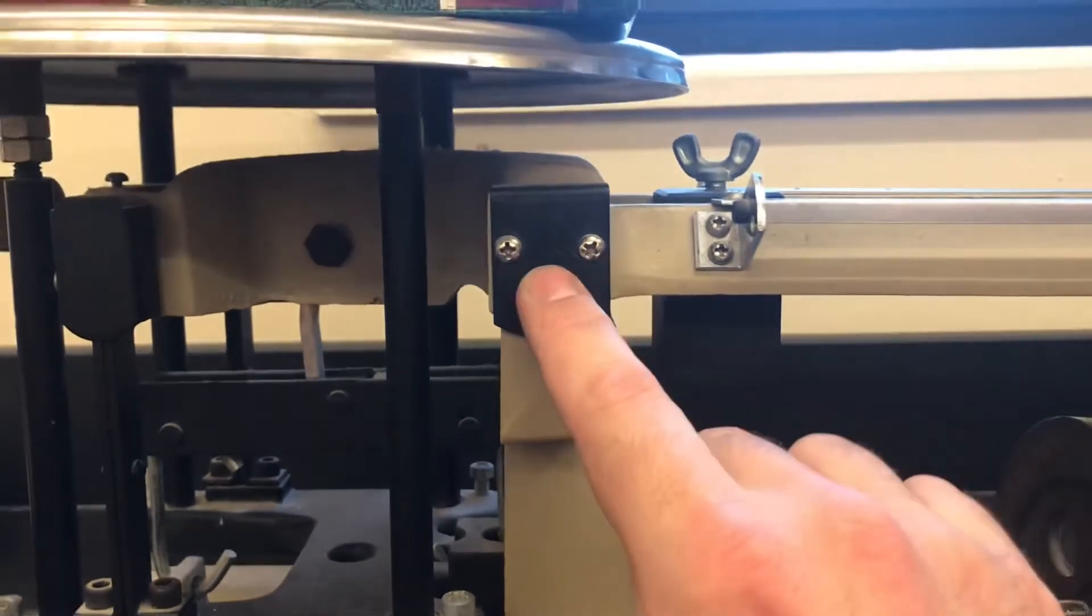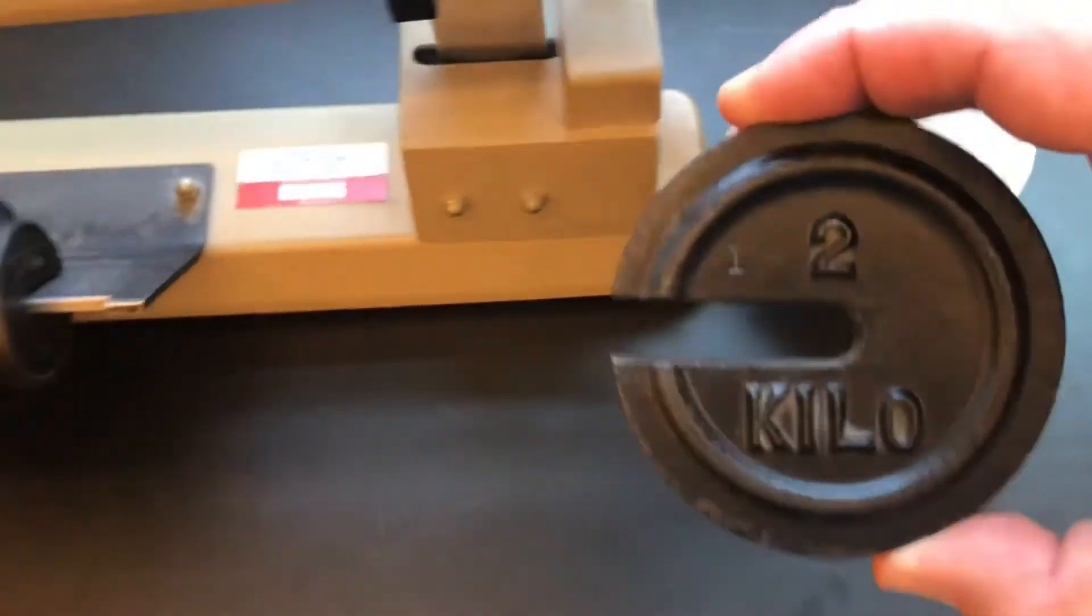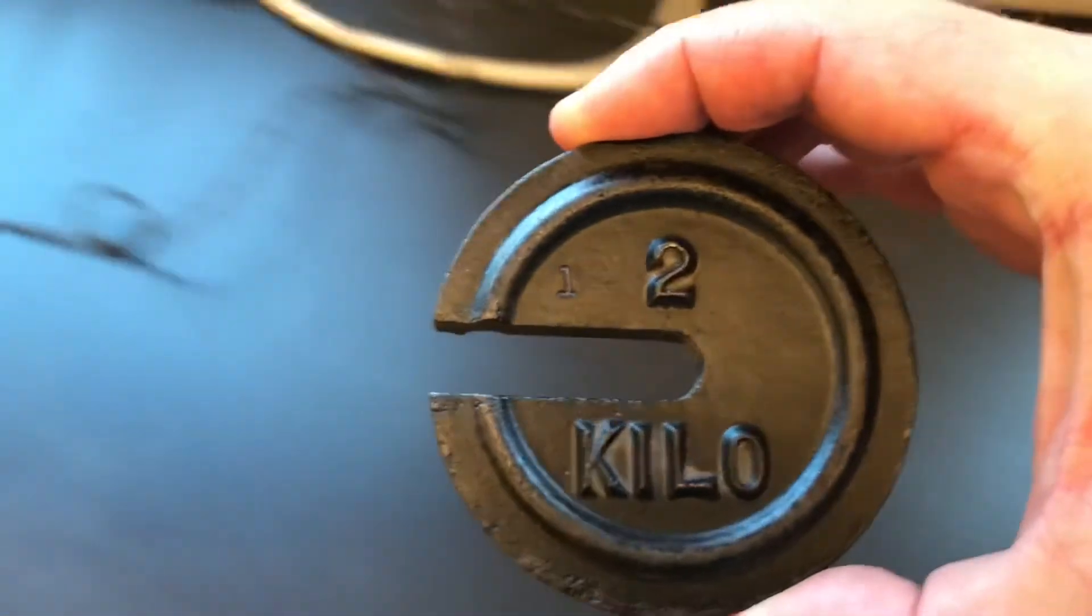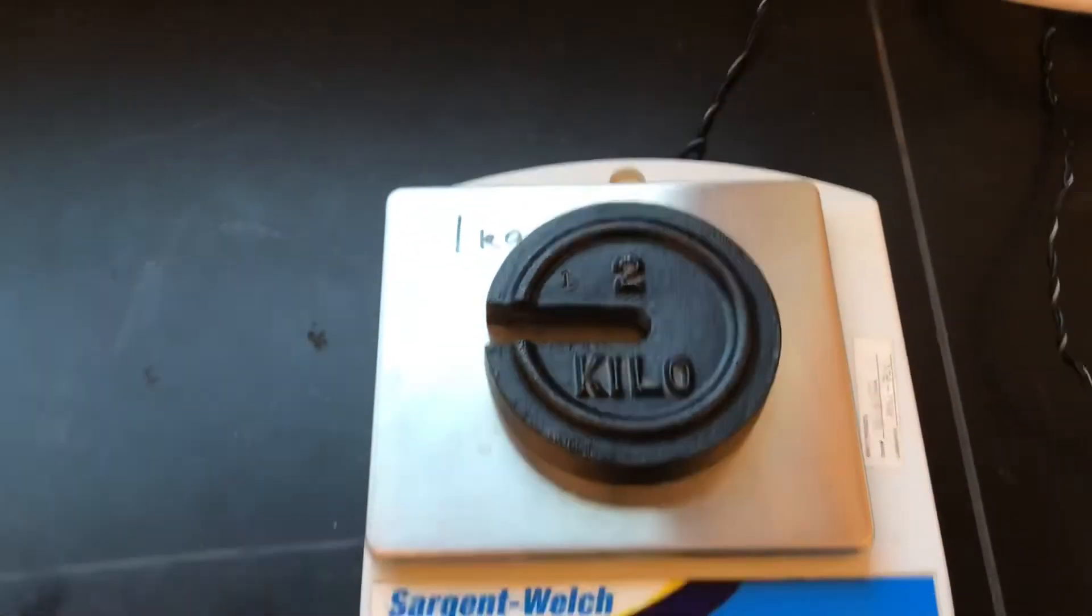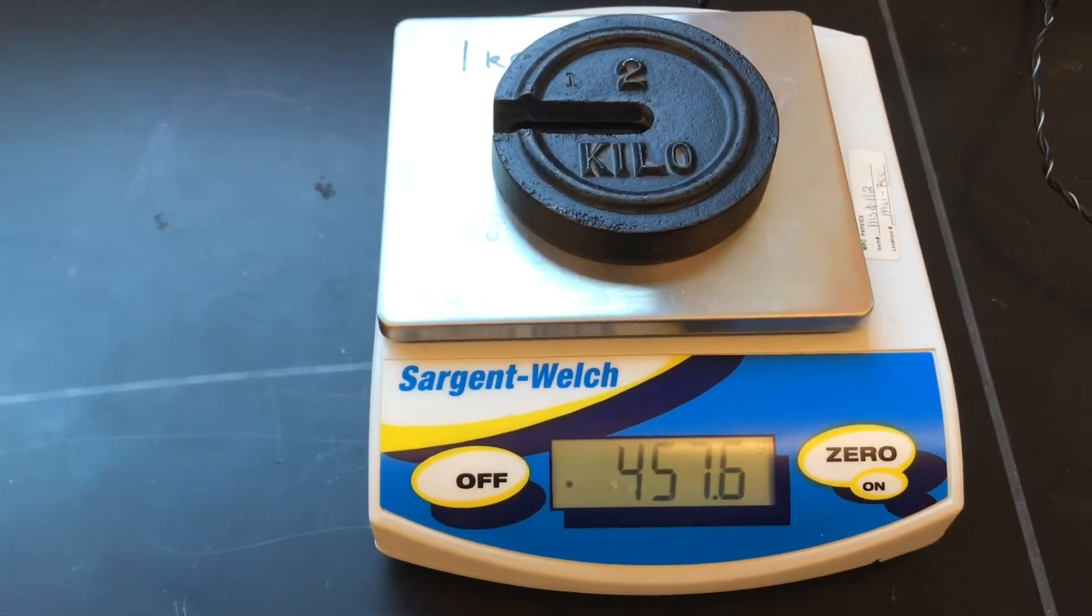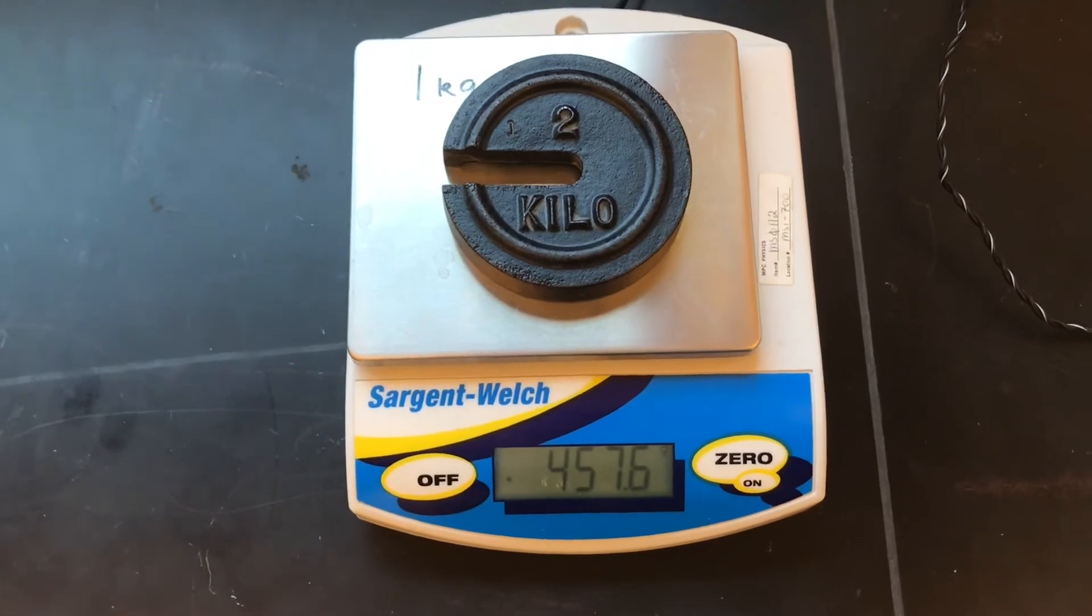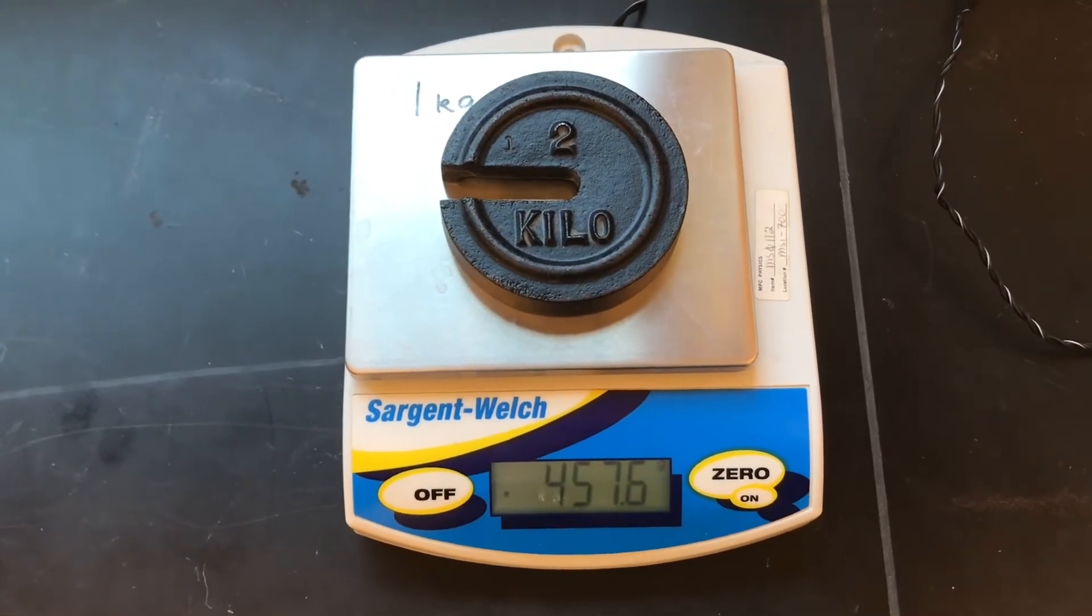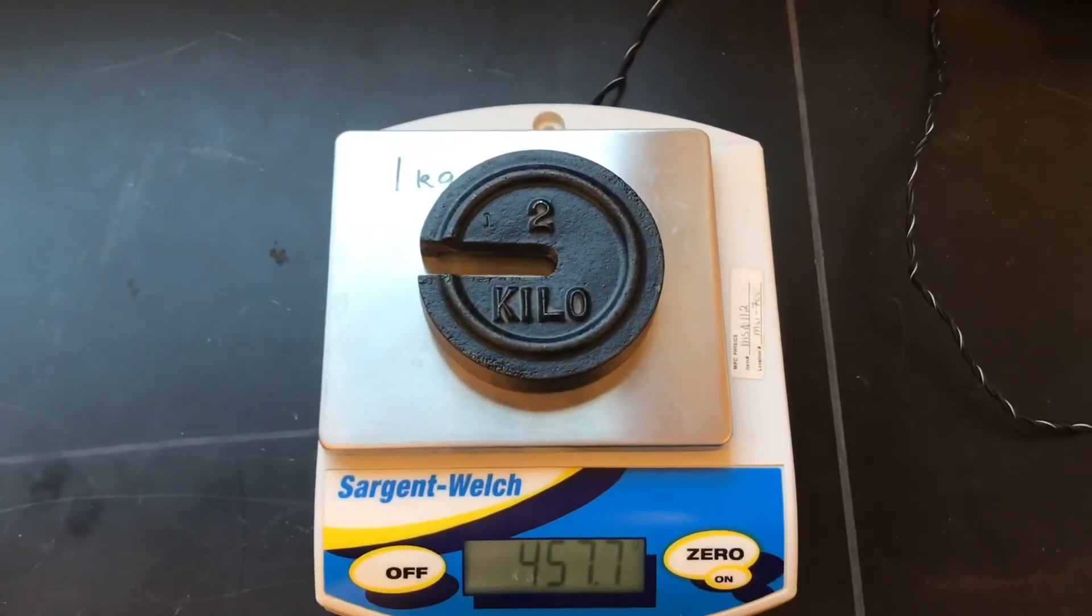Next, what I'm going to do is take this two kilo counterbalance and put it on the scale over here. So 457.6 grams is the weight of this counterbalance, which is marked as two kilo.